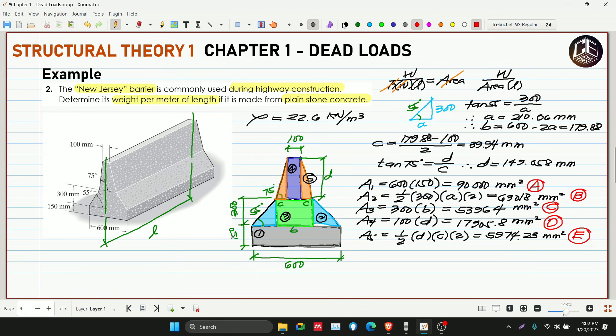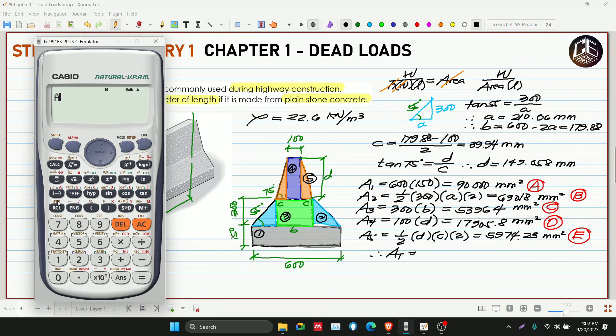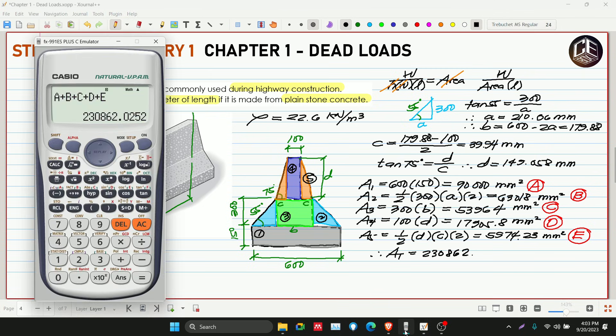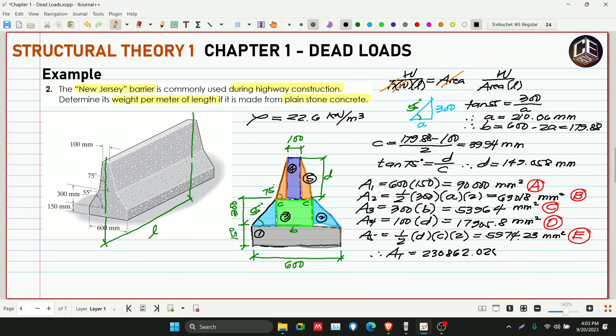Therefore, ang ating area total, ang ating area total is Alpha A plus Alpha B plus Alpha C plus Alpha D plus Alpha E. 230,862.025 millimeter squared.